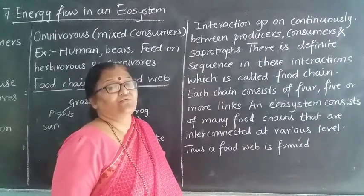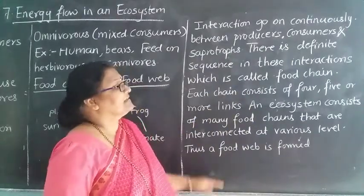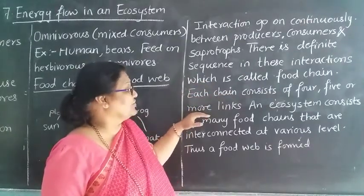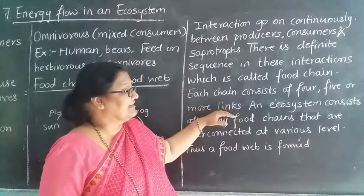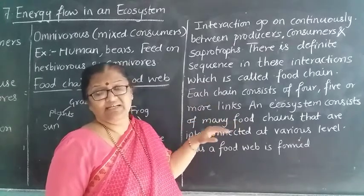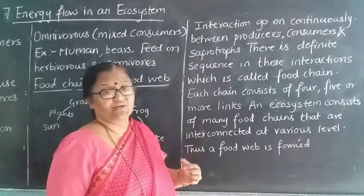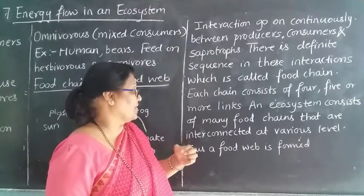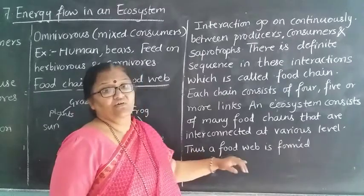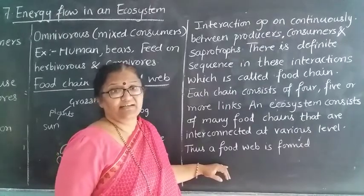In the food chain, various things like producers, consumers and saprotrophs are eating one another. Each chain consists of four to five or more links. An ecosystem consists of many food chains. One animal is depending on another for food, and there are many animals who are depending upon each other. They are interconnected at various levels, and this is nothing but a food web. So the food chain and food web are interrelated.